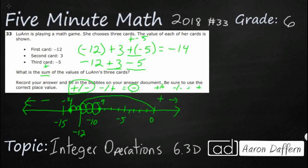Another way we could have done this is to bring the two negatives together: negative 12 minus 5. When you have a negative minus something, it acts like adding, giving you negative 17. Then adding 3 is like subtracting because it's the inverse, giving negative 14 — the same answer.